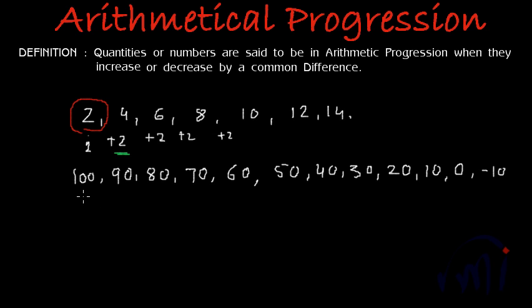So here the first term is 100 and to find the next term we have to subtract 10 every time. So 100 minus 10 gives us 90 and 90 minus 10 gives us 80 and 80 minus 10 gives us 70. So what is this series? This is a decreasing arithmetic progression where the first term is 100 and the common difference is minus 10.